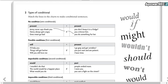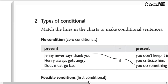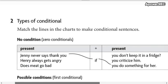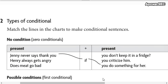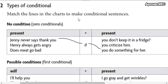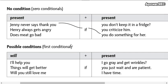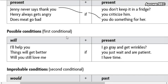In this part, we have the types of conditions. We are going to match the lines that we have here to make conditional sentences. Zero conditional — remember it's present, present. For example: Jenny never says thank you if you do something for her. So this is generally, always true. You're going to match the other pieces of sentences.